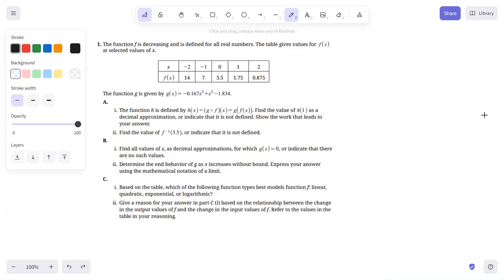Okay, number one, we have a table of values and a function. In part A1, we're going to do the composition H equals G of F and H of 1. So H of 1 equals G of F of 1. F of 1 is equal to 1.75 according to the table, so we get G of 1.75.